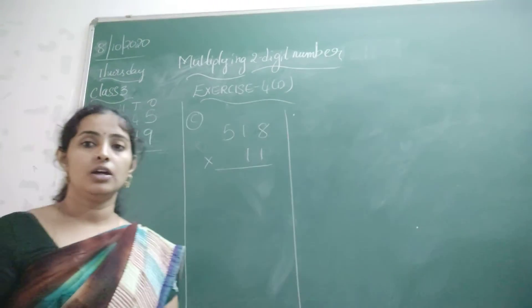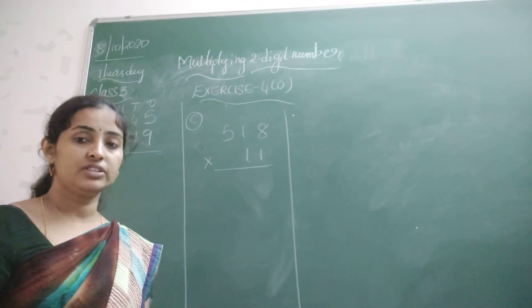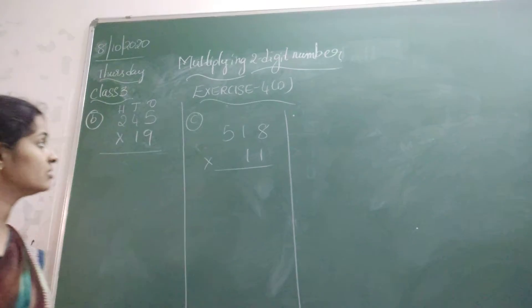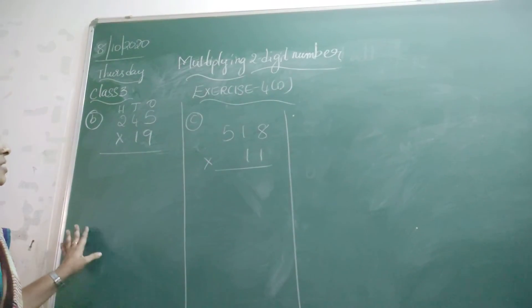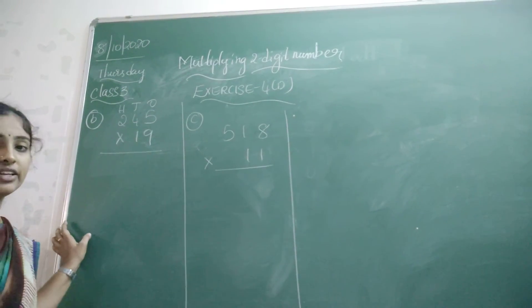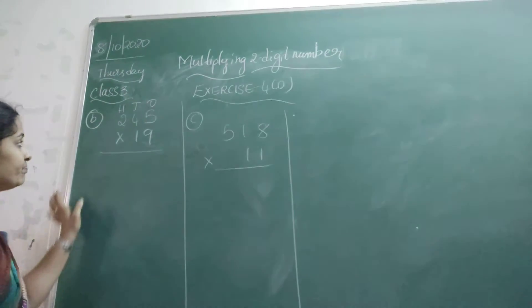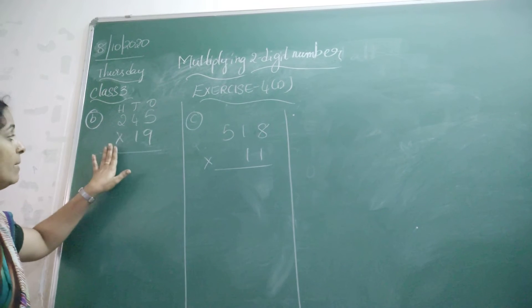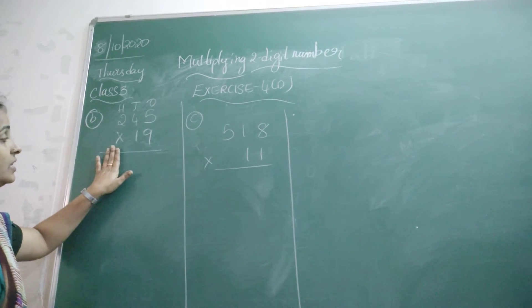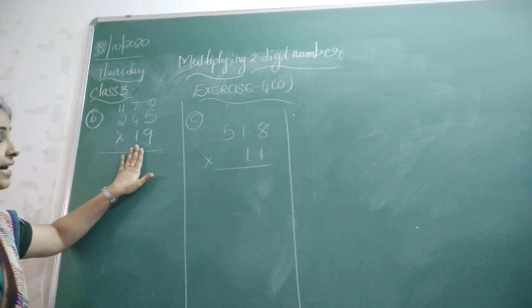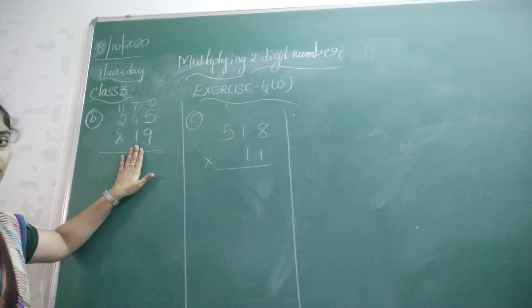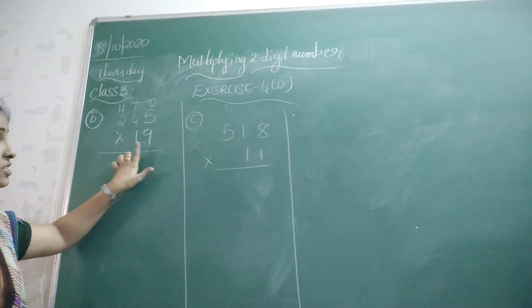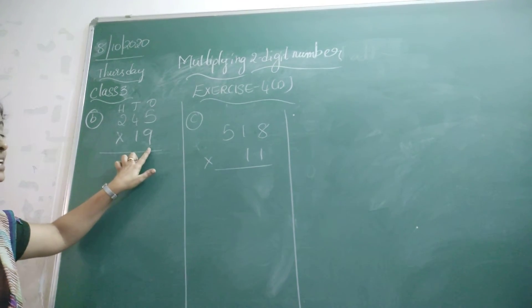Welcome back children. Now we are going to see the next few problems. Look at the next question: 245 multiplied with 19. What is that? It is 19.